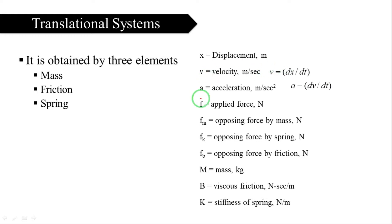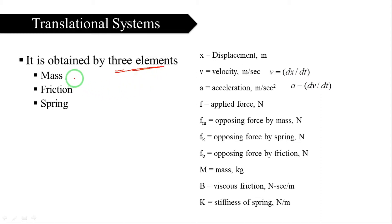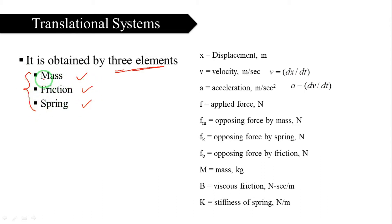Before finding the transfer function of the translational system, we have to know some concepts. The translational system consists of basically three elements — just like in an electrical circuit the basic elements are R, L, C (resistor, inductor, capacitor) — here also there are three elements: mass, friction, and spring. If any object moves linearly, there are some opposing forces applied on the object: mass, friction, and spring.